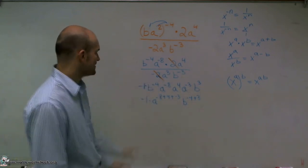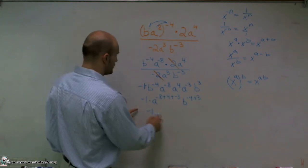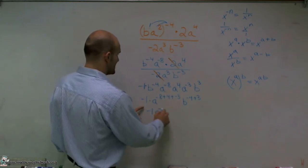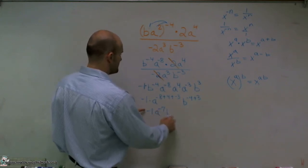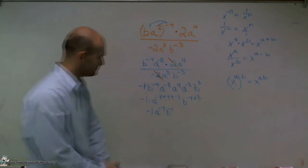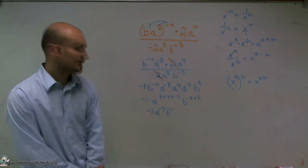And when you add this up, what you get is negative one, A to the negative seventh, and B to the negative first.